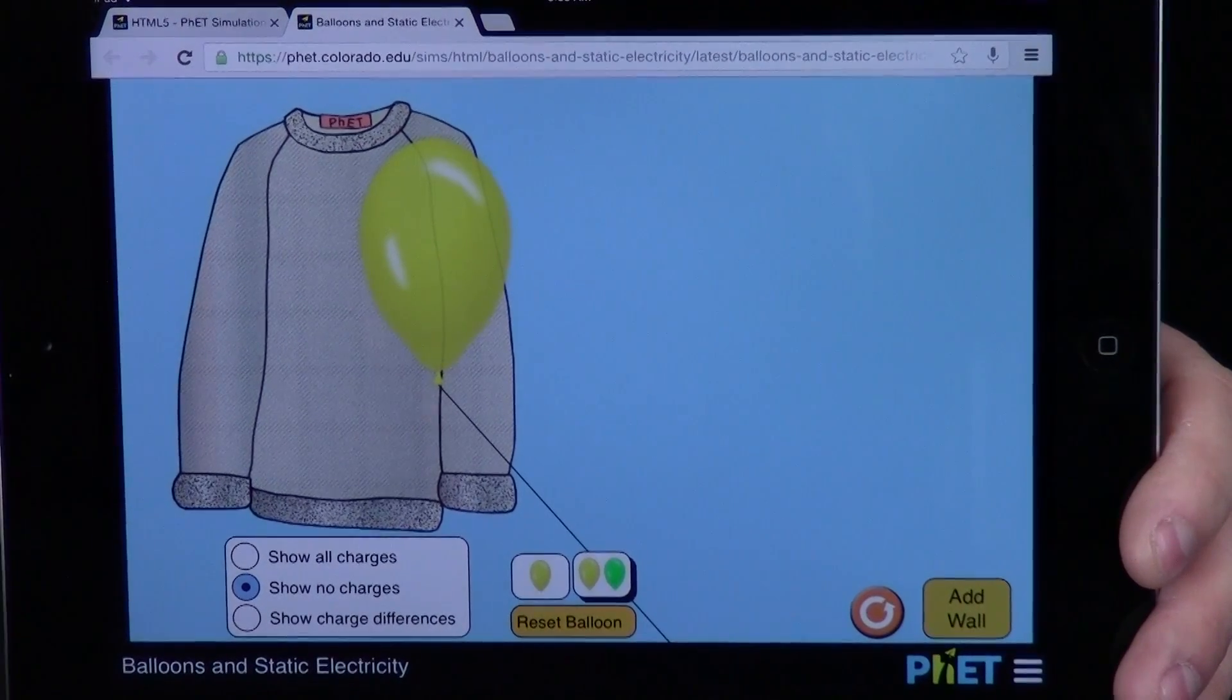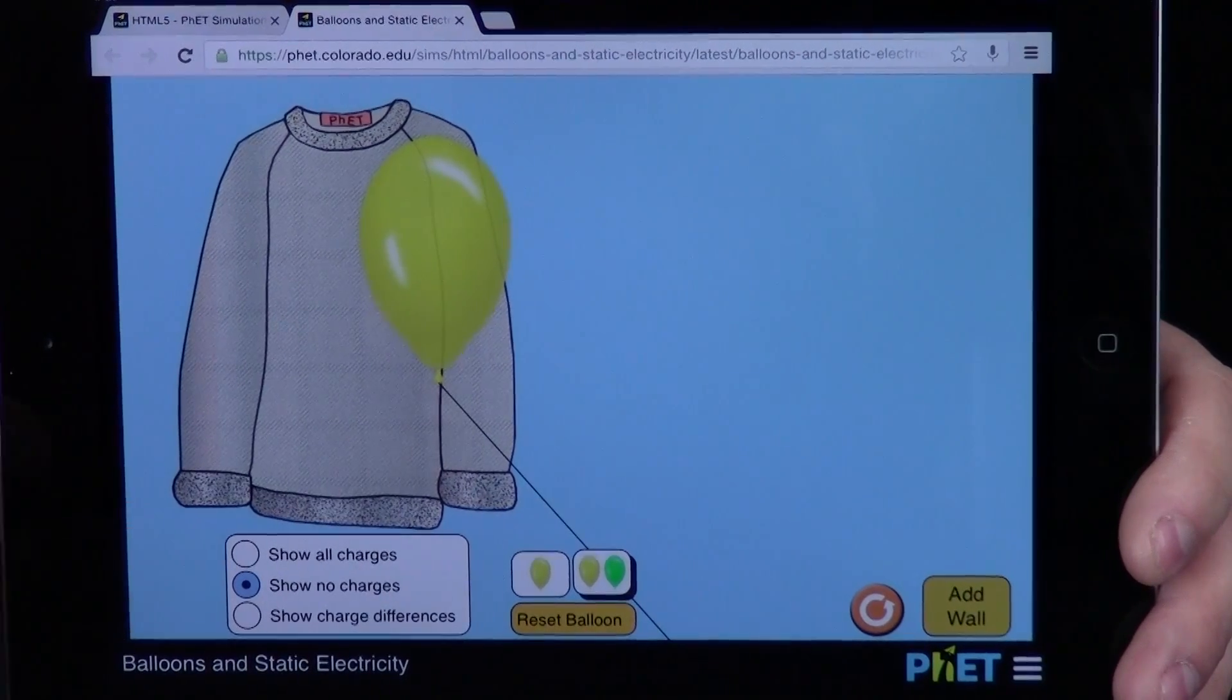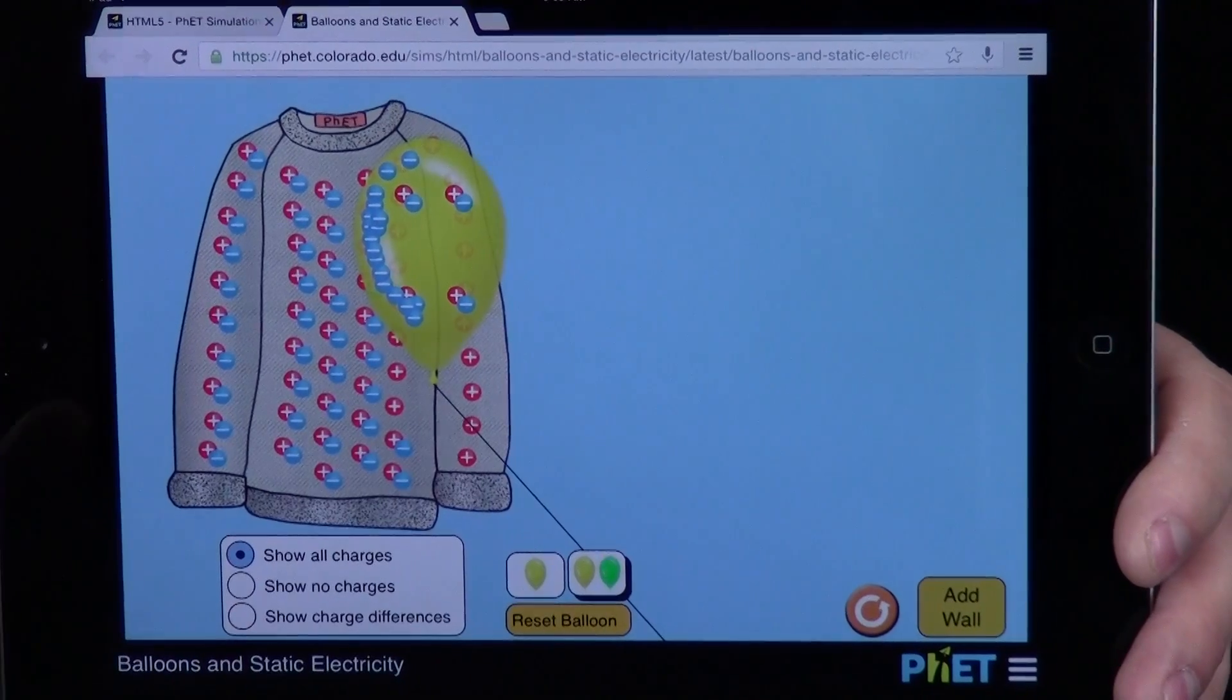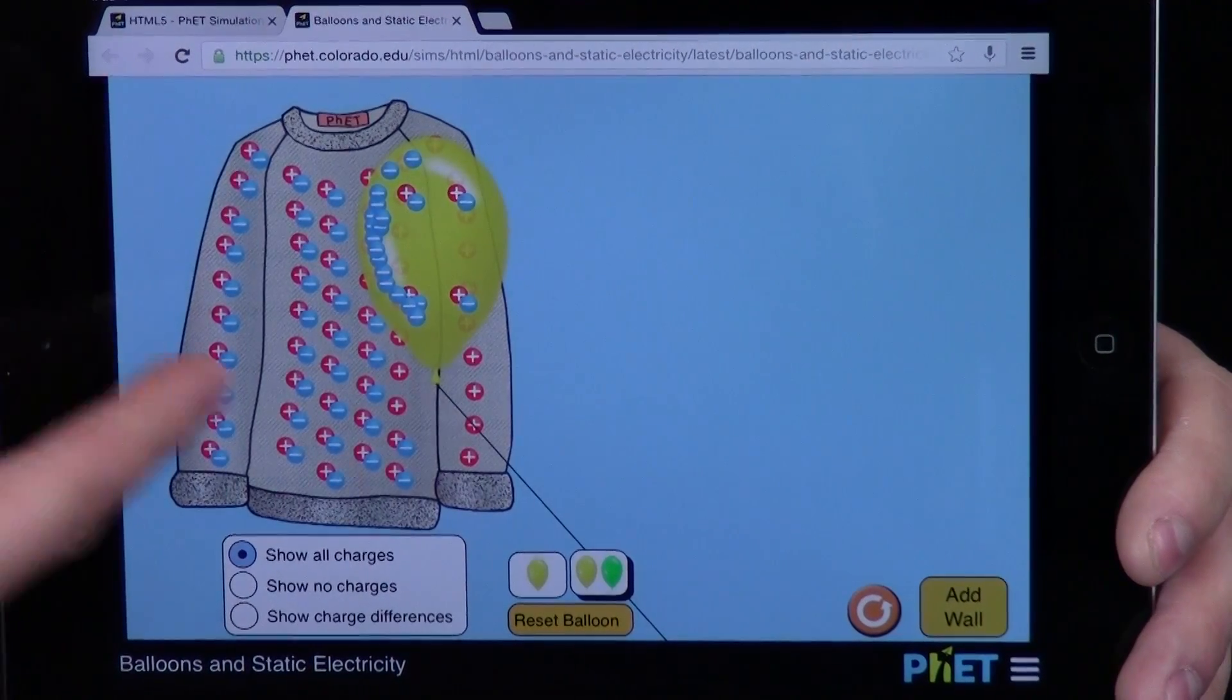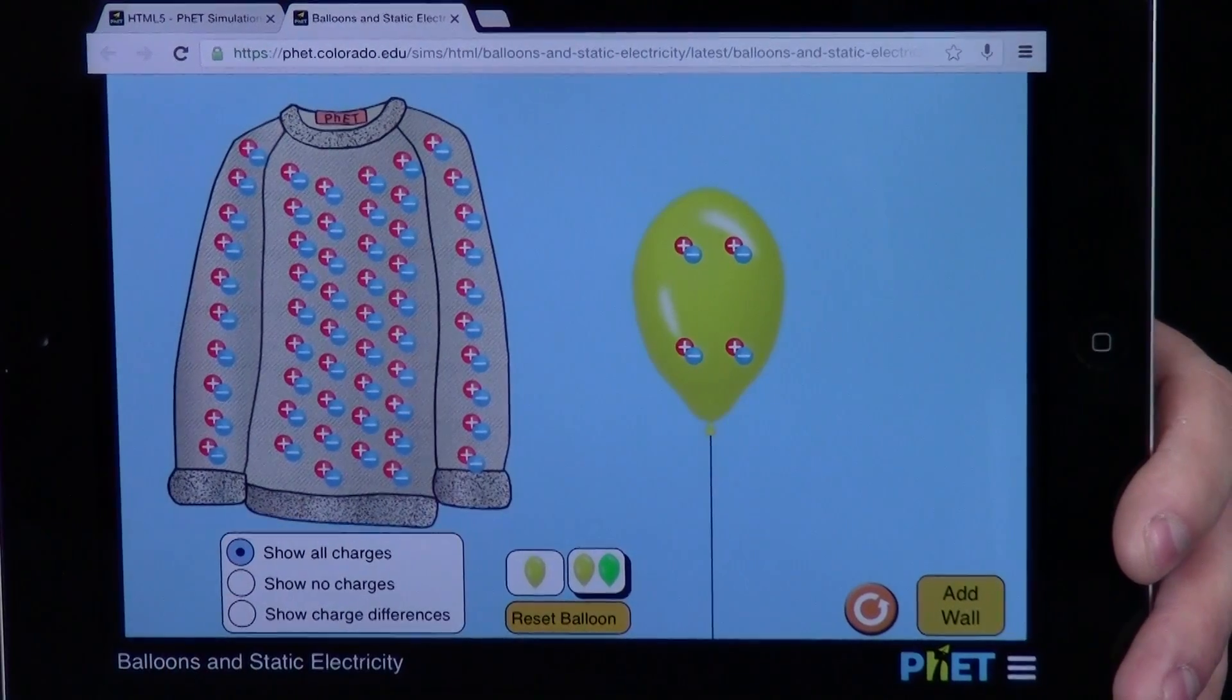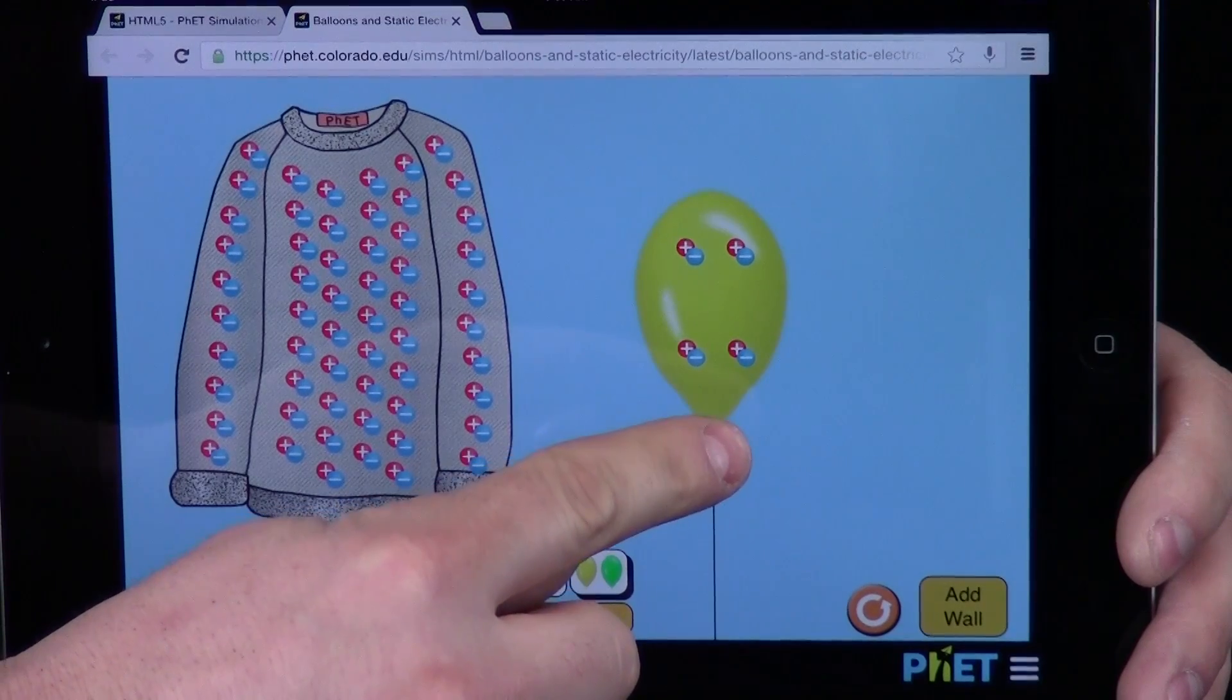Well, to understand why the balloon did that, I have to see the charges—the positive and negative charges. So I just need to hit this button: show all charges. Whoa, and the charges pop up, and it looks different from when it began. So let's reset this whole thing. Now I can see positive and negative charges on the sweater, positive and negative charges on the balloon.